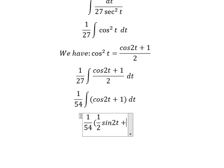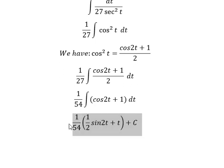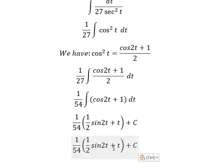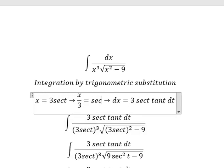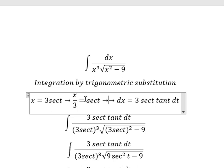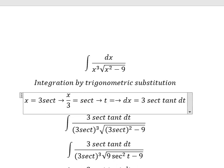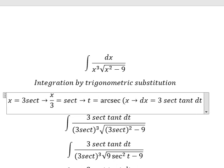The integration gives us 1/2 sine 2t plus t, all divided by 54, plus the constant C. For t, we need to express it in terms of x. Since x equals 3 secant t, we divide both sides by 3 to get t equals arcsecant of x/3.